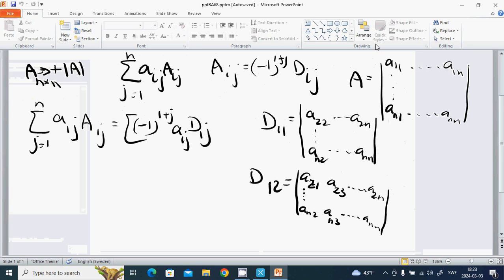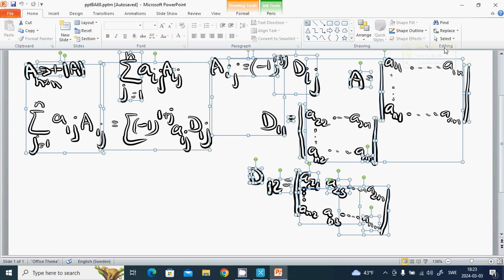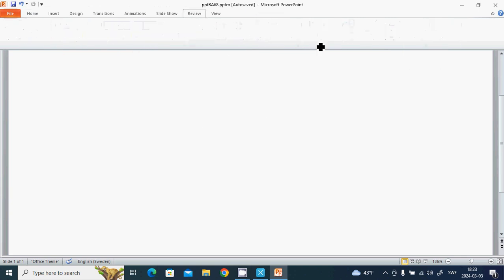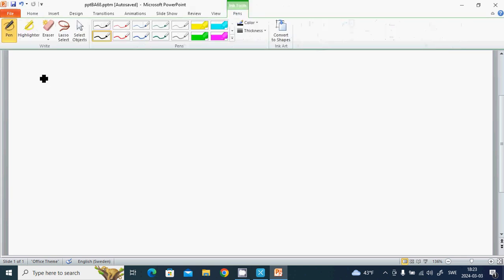And absolute value of a equals the squared root of ax² plus ay² plus az².